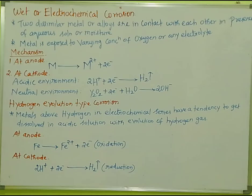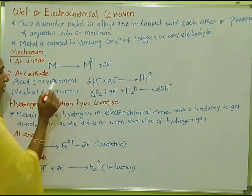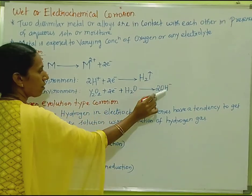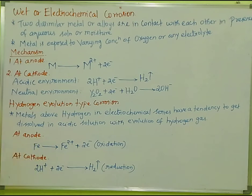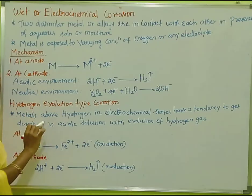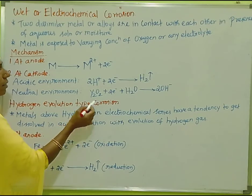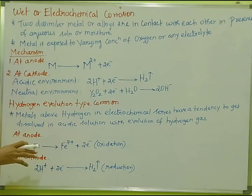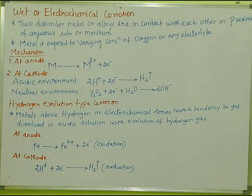So in the cathode, there are two reactions: one in which hydrogen gas evolves (in an acidic environment), and one in which hydroxide ions are formed (in a neutral or alkaline environment). The metal ions from the anode and the products from the cathode diffuse together to form a corrosion product.